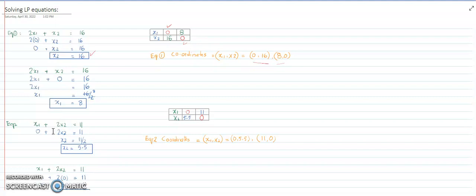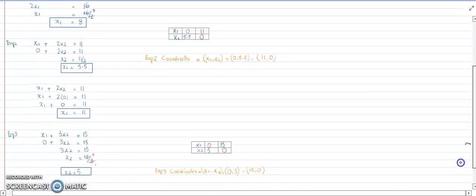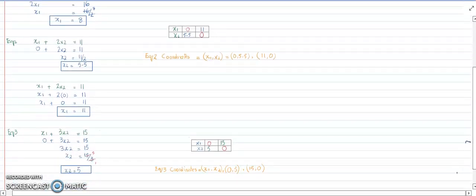Now it's x2's turn to be 0. We put the value of x2 equals 0, and then we get the value of x1 equals 11. Similarly, we have solved equation number 3 as well.